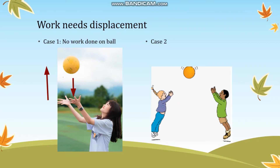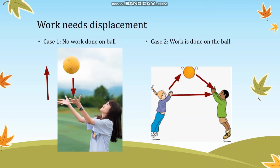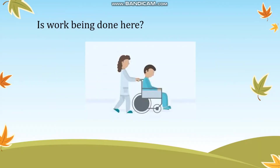Now look at the second scenario where two children are playing with the ball. The ball was initially in the first child's hand, then it moves up, comes down, and is caught by the second child. Do you think work is done in this case? Yes, work is done on the ball because the ball has moved from the hand of the first child to the hand of the second child. There is a change in position — there is displacement of the ball — that is why work is done.